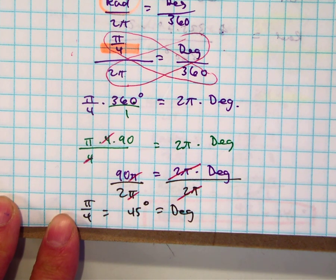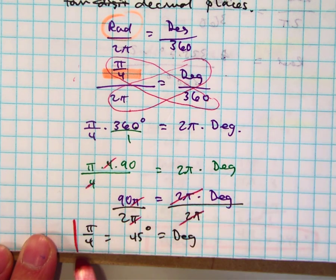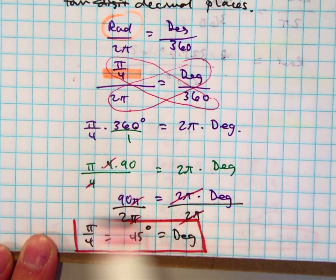Now, it does tell us to round to decimal places, but we don't have any decimal places because we have a nice, exact answer.